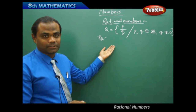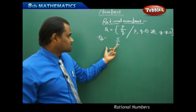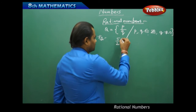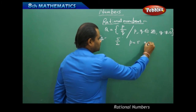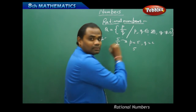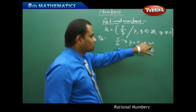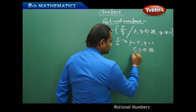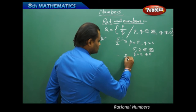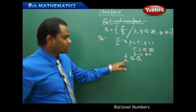Let's see some examples. Take φ/2 — is this a rational number? Comparing with the form P by Q, P is φ and Q is 2. Both φ and 2 are integers, and Q equals 2 is not equal to 0, so both conditions are satisfied. Therefore, φ/2 is a rational number and belongs to Q.